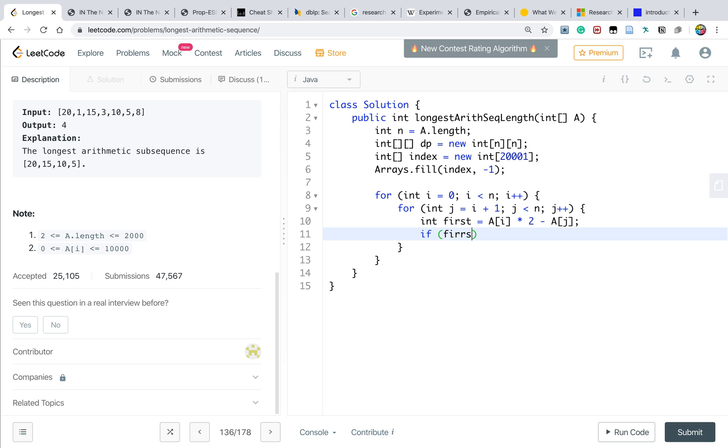So if this first is less than 0, which means it's impossible for us to find its corresponding index. Otherwise, if the index first is equal to negative 1, we just continue. Otherwise, we find it. So that means dp[i,j] ending with these two elements will equal to dp[index first, i] plus 1.